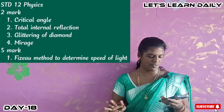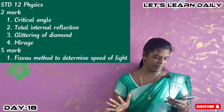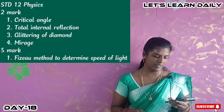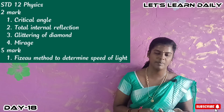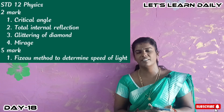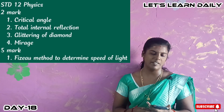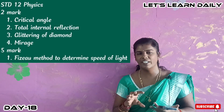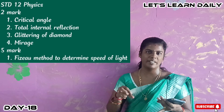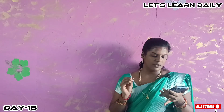There are 4 short answers. In 5 marks, we will start with the physics method to determine speed of light. This is a very important question. In this lesson, we will start with the diagram and the experiment explanation, and the final answer.